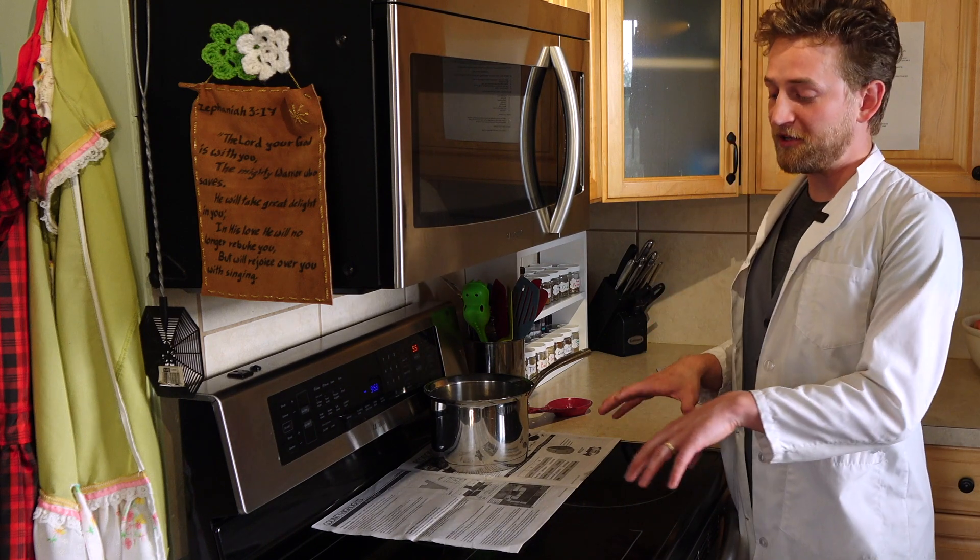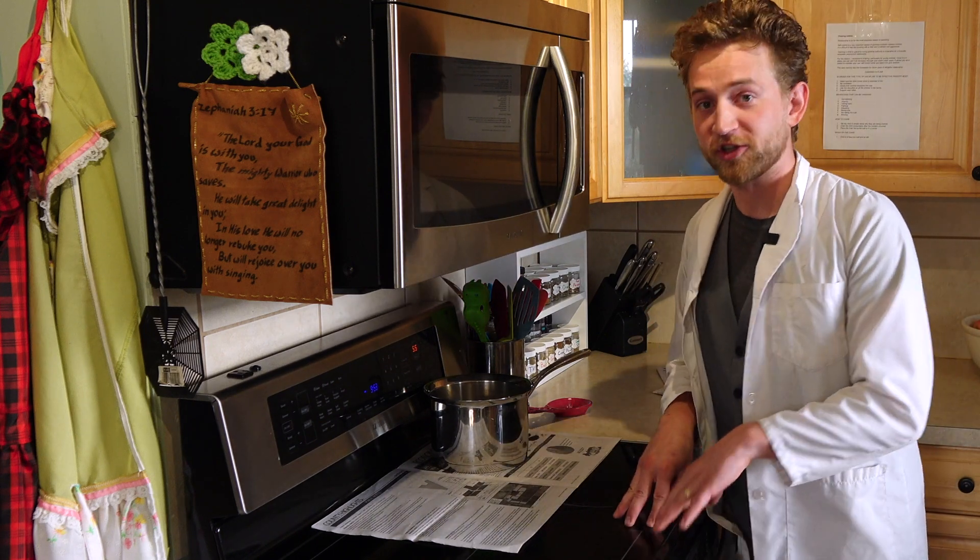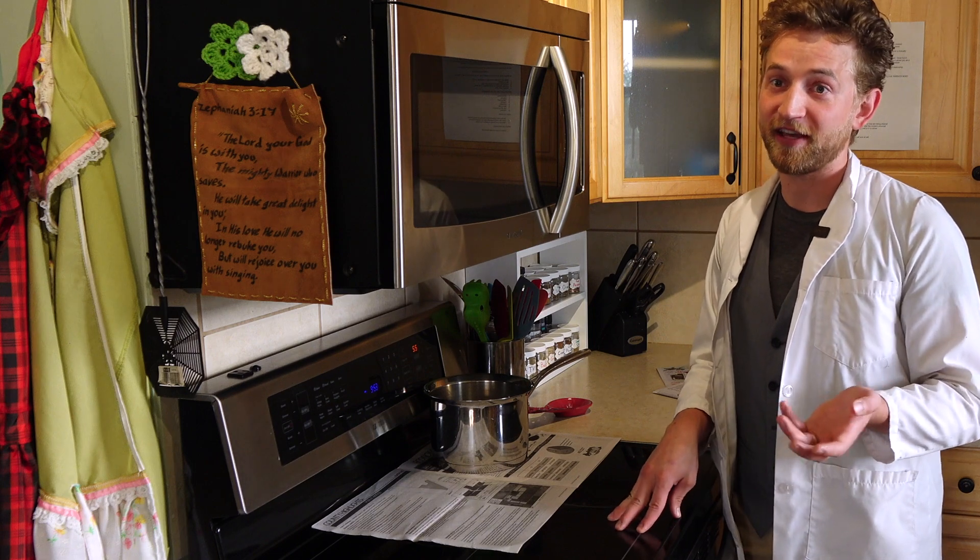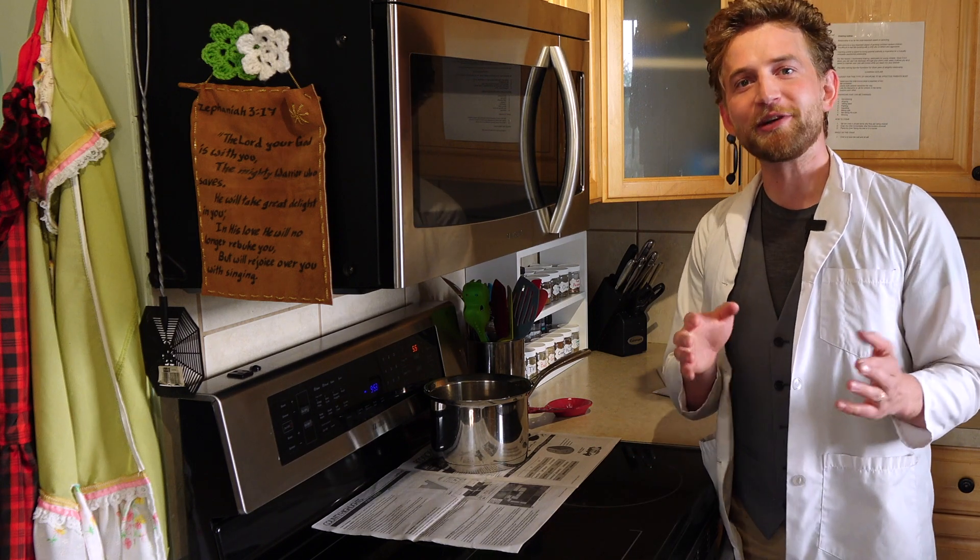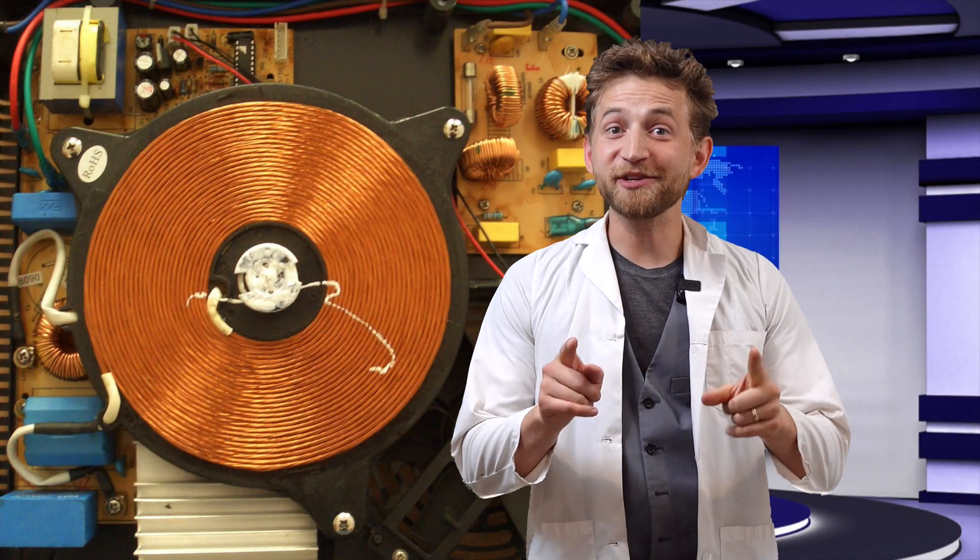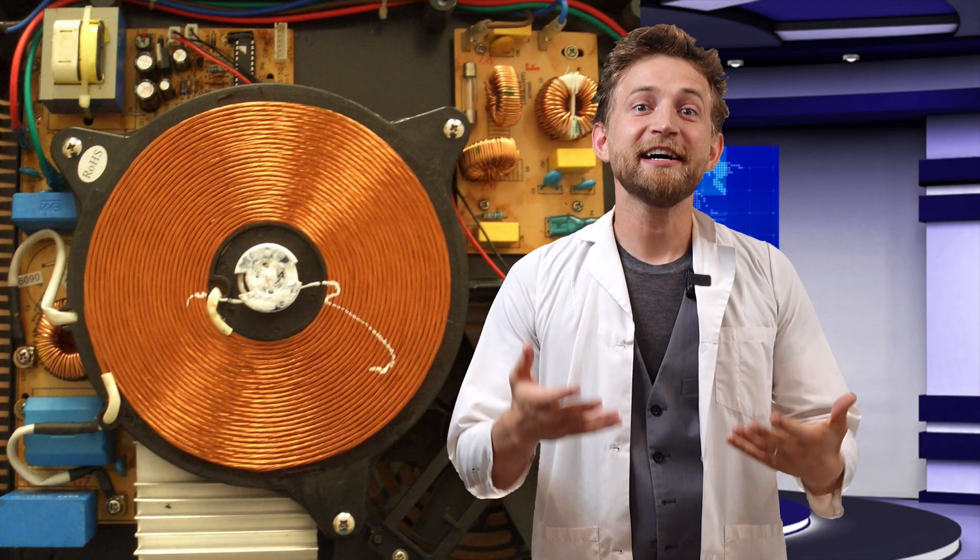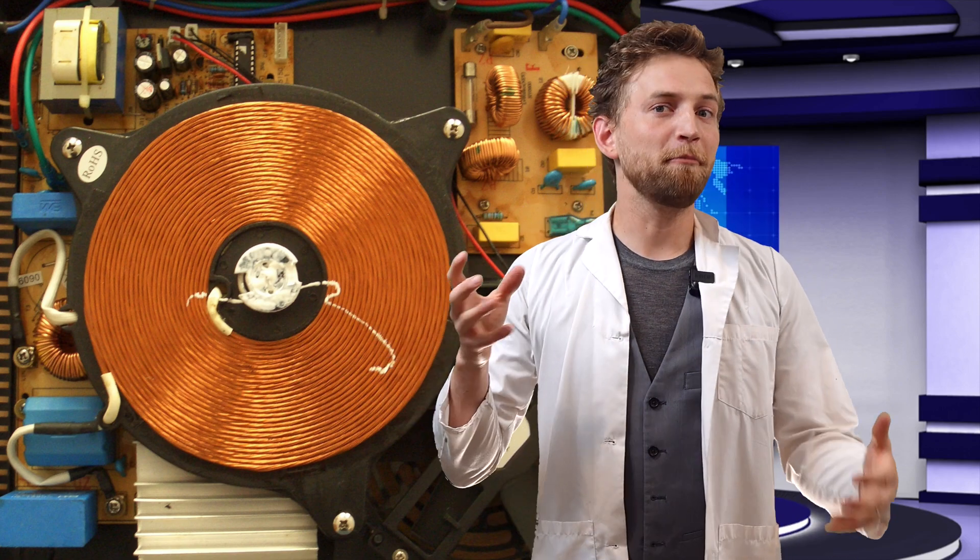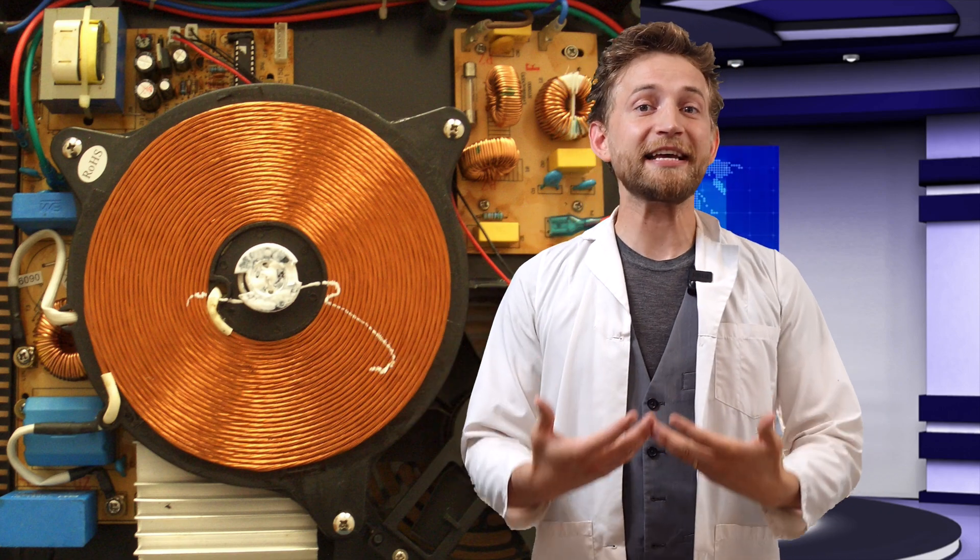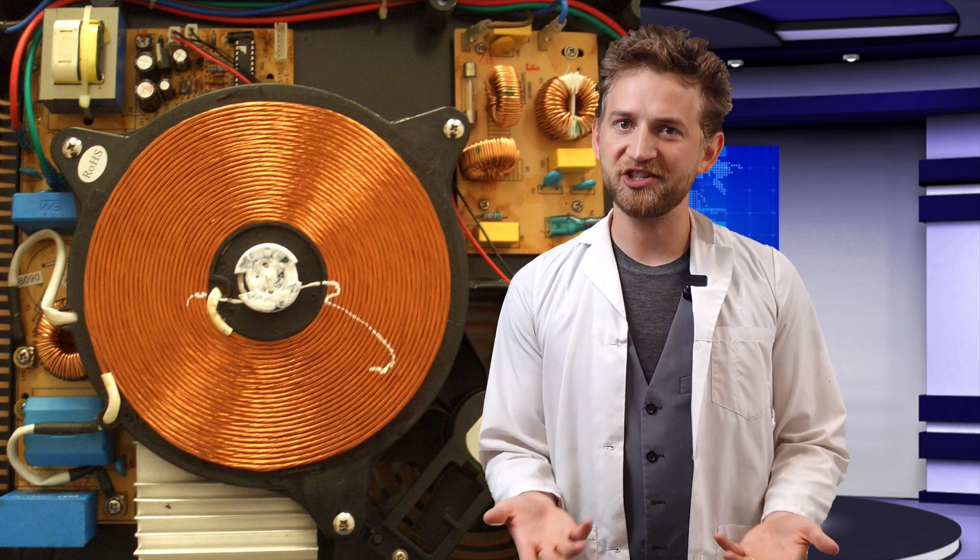My wife does not want me to take apart my stove to show you what's on the inside for the sake of science, and I can't really blame her. Let's head back to the studio and I'll show you exactly what's going on. Okay, so now we get to look at what's inside of an induction cooktop. So behind me here you can see a large coil of wire. This is what's inside of that stove that I just used.